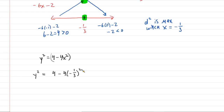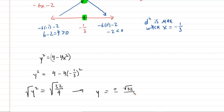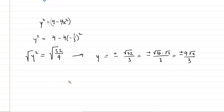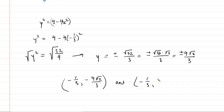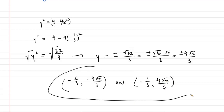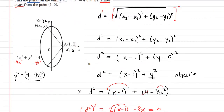Calculating that gives y squared equals 32 ninths. Taking the square root yields y equals plus or minus the square root of 32 over 3. The square root of 32 simplifies as the square root of 16 times the square root of 2, which is 4 radical 2. So y equals plus or minus 4 radical 2 over 3. The two points with maximum distance from (1, 0) on the ellipse are (negative one-third, negative 4 radical 2 over 3) and (negative one-third, positive 4 radical 2 over 3).